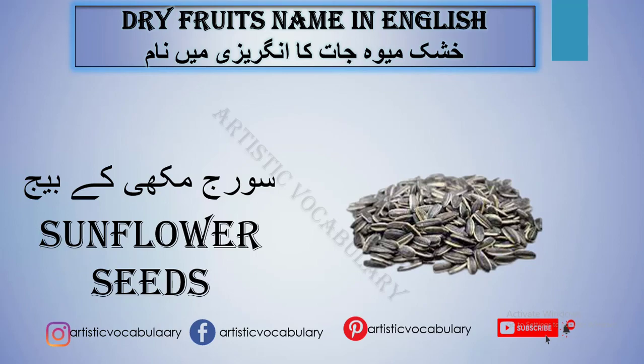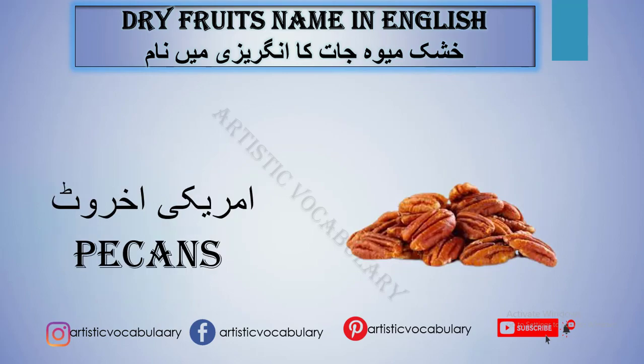These are white seeds inside and they have a black cover on the outside. Next word is Amriki Akhrot, meaning Pecans.